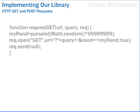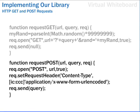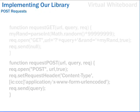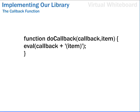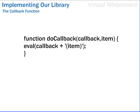The query argument must be suitably encoded prior to calling the function, though the cache-busting random element is added by the function. Next, let's continue with the POST function. How do we deal with the callback function? We're going to add a further function. This function uses JavaScript's eval function to execute another function whose name is passed to it as an argument, while also passing to that function an argument of its own via item. Let's look at how these functions might interact when called from an event handler.